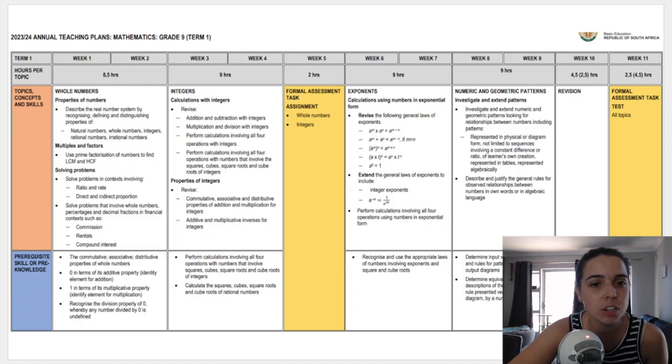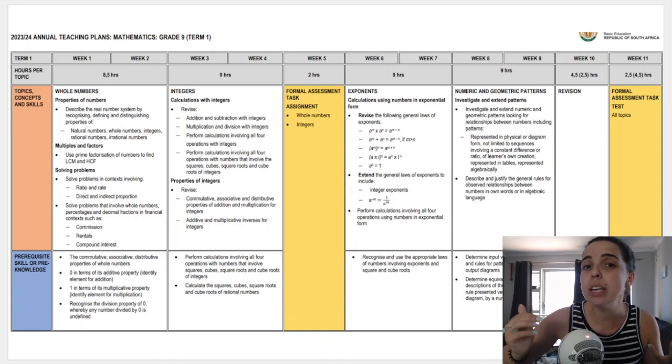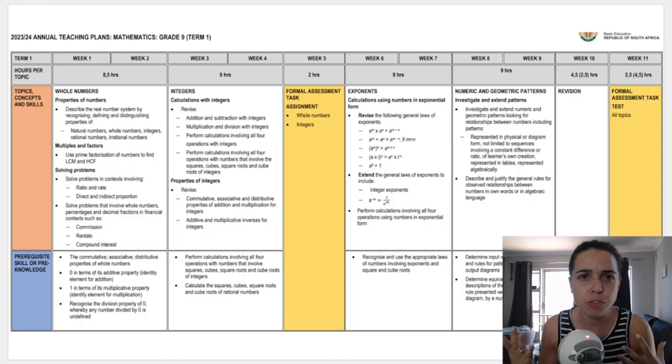And what's also cool about this document is at the bottom it tells you it says here prerequisite skill or pre-knowledge. So basically this tells you what you need to know already from grade eight or grade nine. So for example if you're in grade nine the prerequisite skills will be stuff that you need to know from grade seven and grade eight. So if you're working with a tutor, if you're watching YouTube videos, if you have your old textbooks or notebooks you can go over those sections again. Right so that is grade nine.